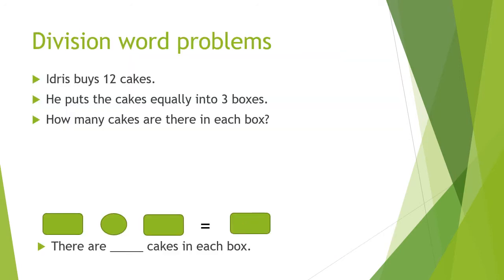Okay, so this one teacher will show you what to do. You can practice with me while we're doing it or you can just watch. So we first read the question: Idris buys 12 cakes. He puts the cakes equally into 3 boxes. How many cakes are there in each box?